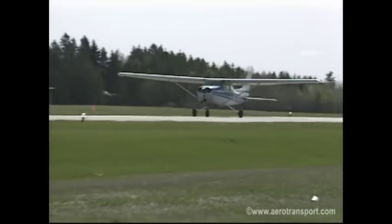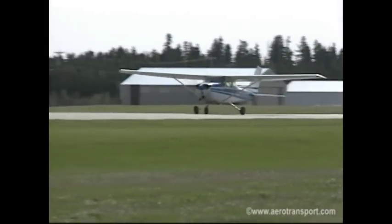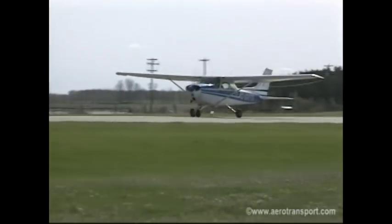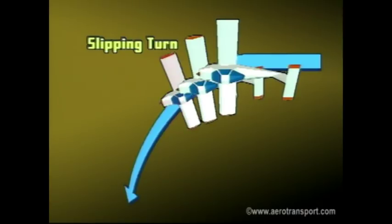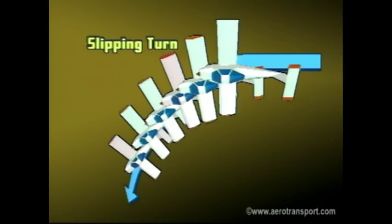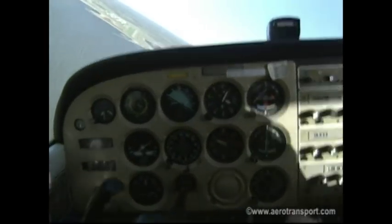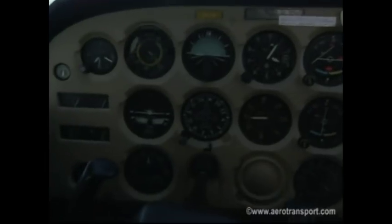Simultaneously adjust the pitch attitude to resume the desired angle and airspeed to avoid stalling. In the slipping turn, the yaw induced by bank is only partially opposed by applying opposite rudder. It differs from the other two types of side slips because the aircraft changes heading while losing altitude. You would find it useful if you had to lose height during the turn on to the final approach.